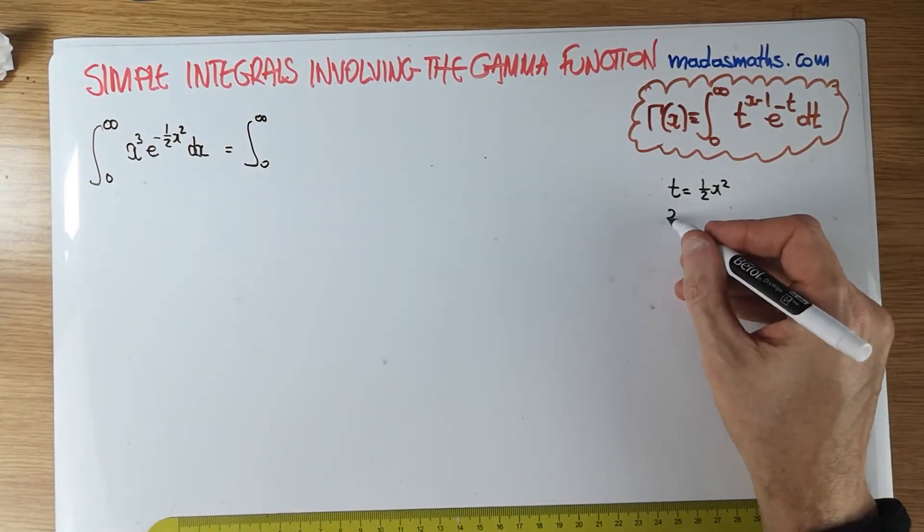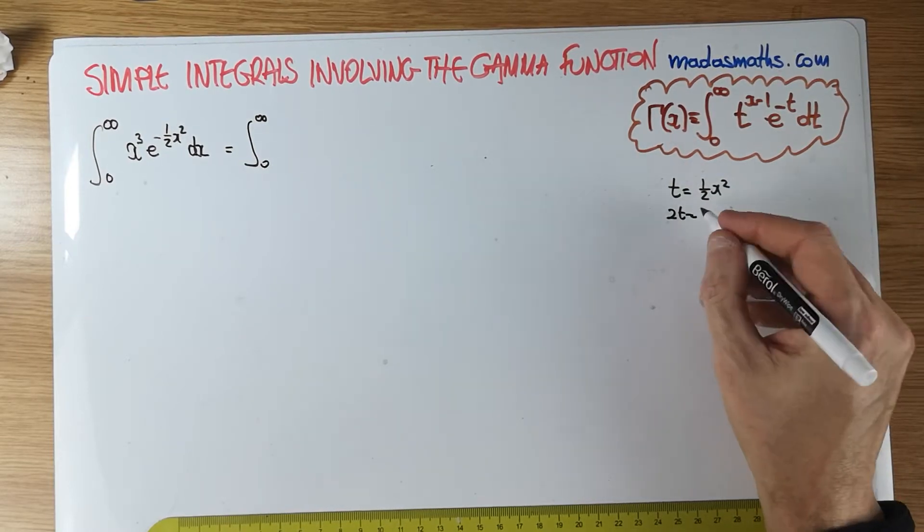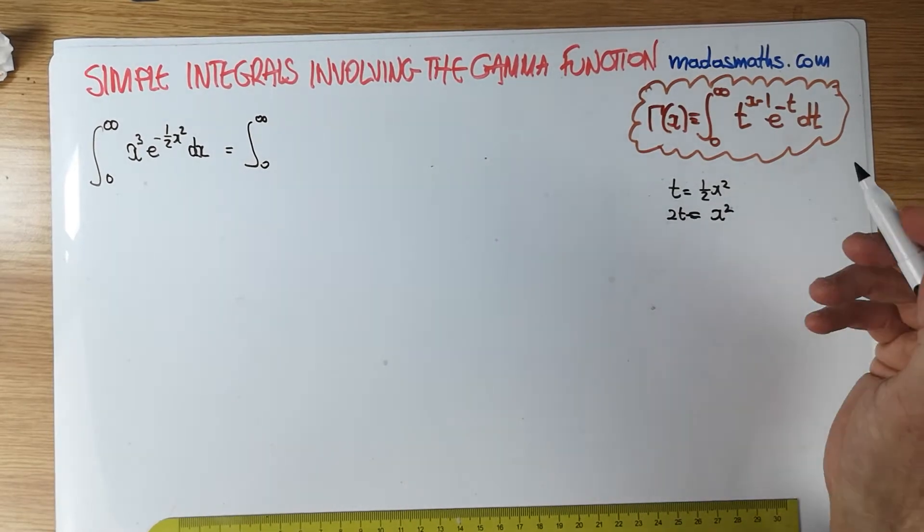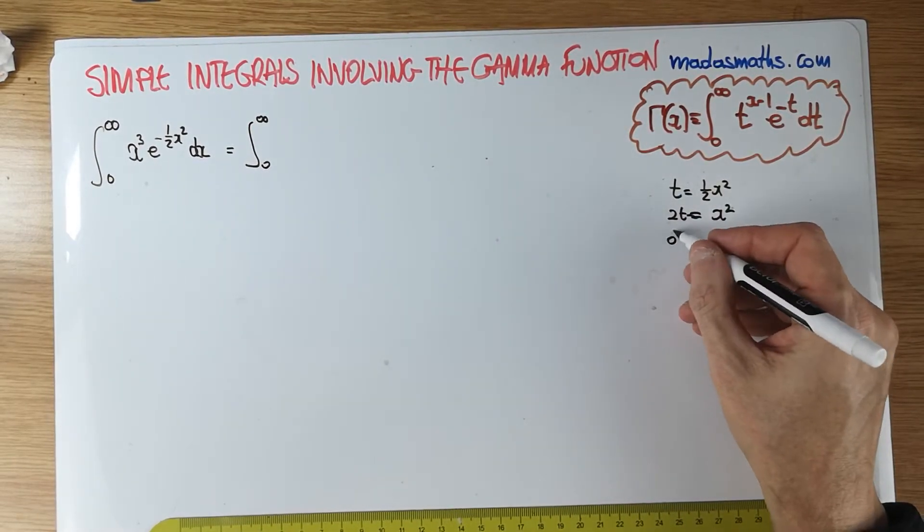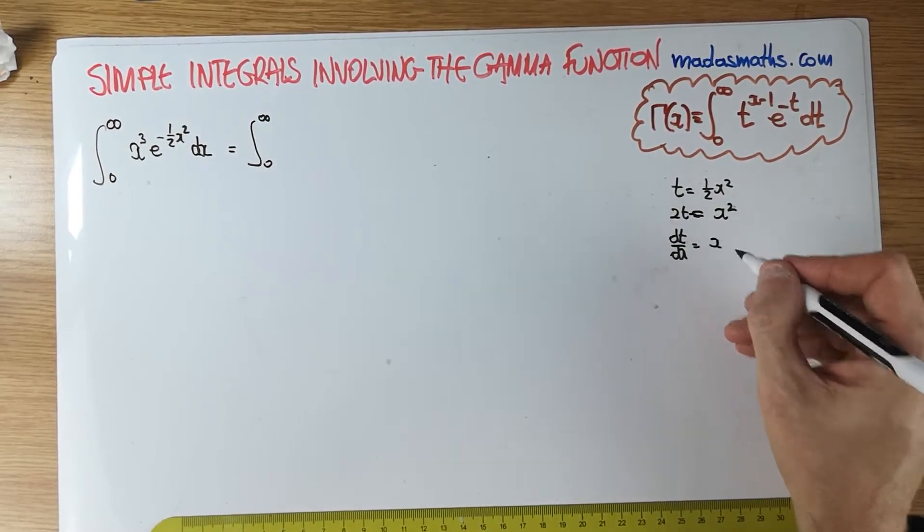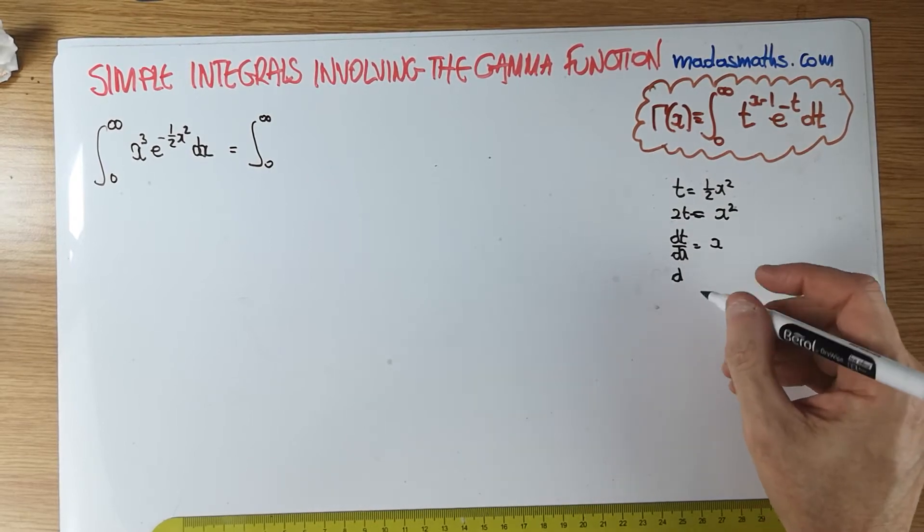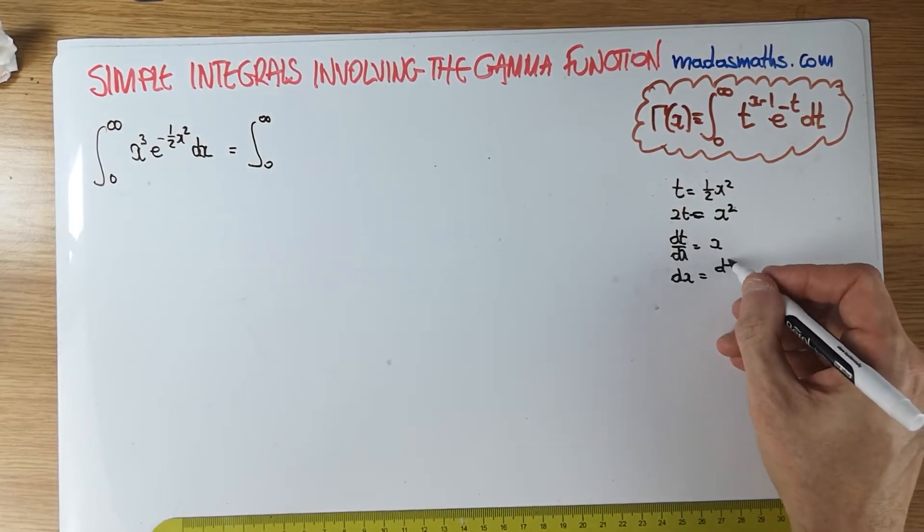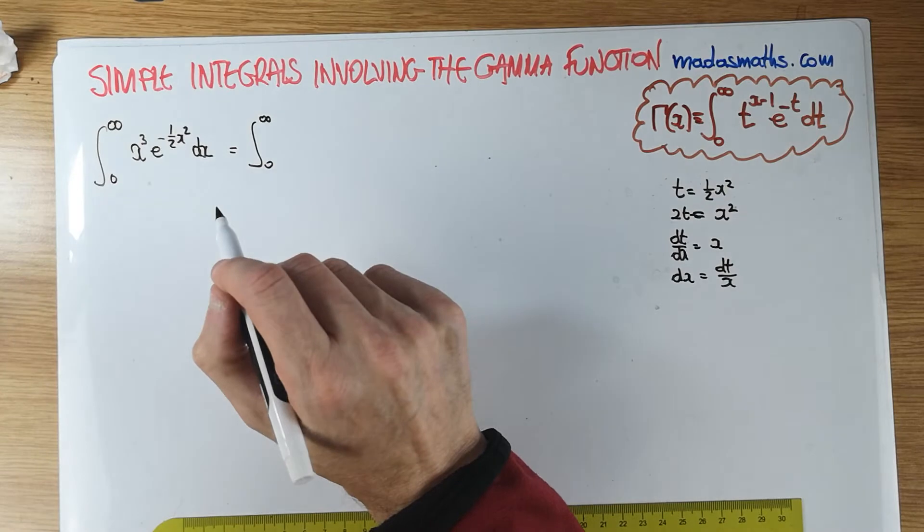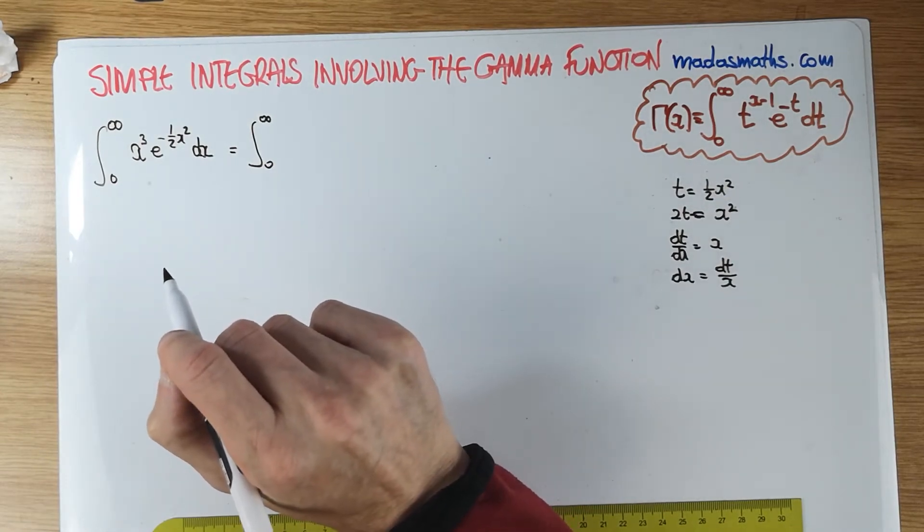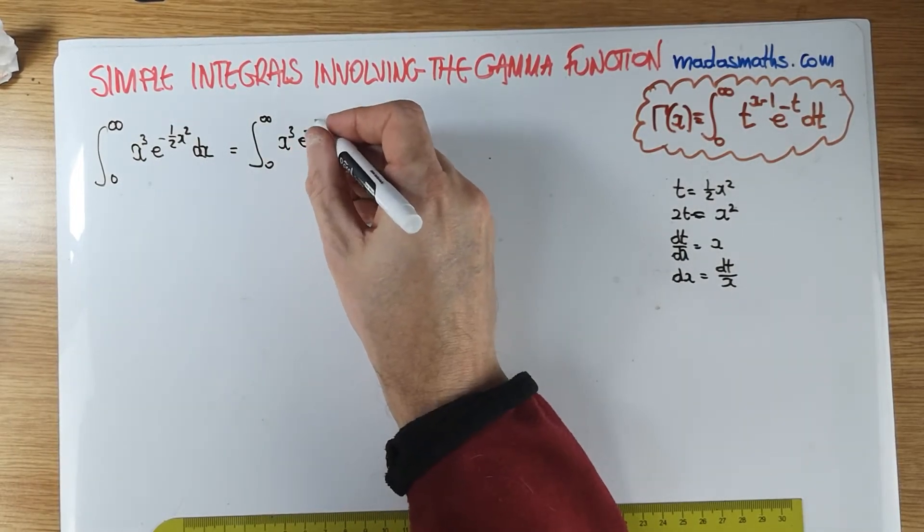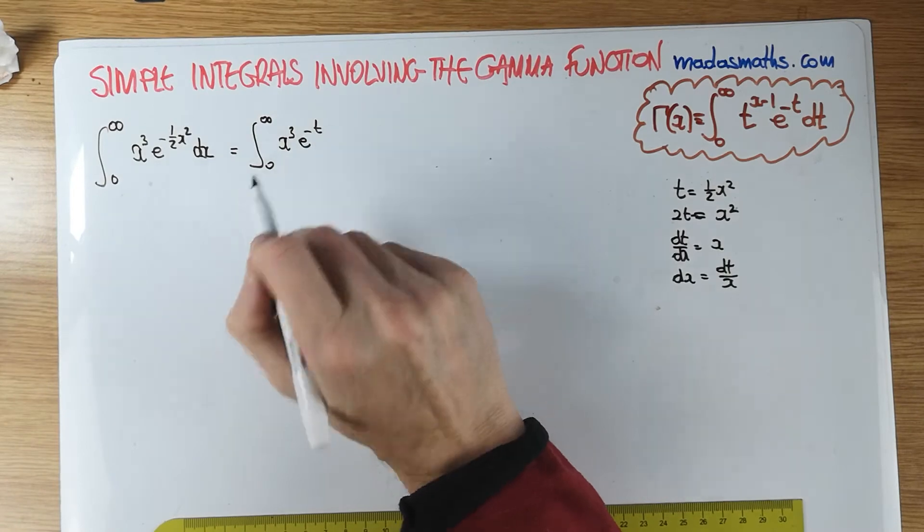And let's say 2t is equal to x squared. I'm not going to move any more. I'm going to get my dx from this, differentiating this line here. So dt by dx, half of 2 is 1, so it's simply x. So my dx is going to be dt over x. Let's plug some of these things in and see what happens.